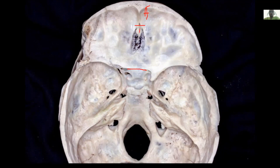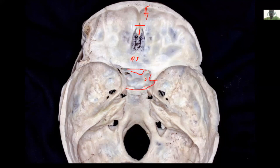What we see here: this is the crista galli, which is the attachment of the falx. Just lateral to midline, we see the cribriform plates, and this flat area is the planum sphenoidale. For the middle skull base, we see the sella turcica, the anterior clinoid, the tuberculum sellae, and the middle clinoid — present in about 24% of cases. For the posterior skull base, the border extends from the dorsum sellae all the way down to the craniovertebral junction.